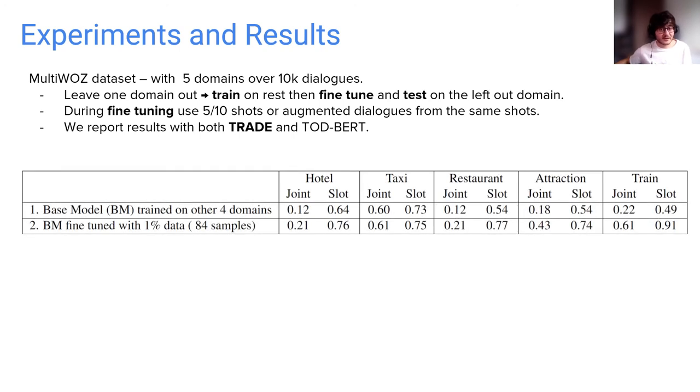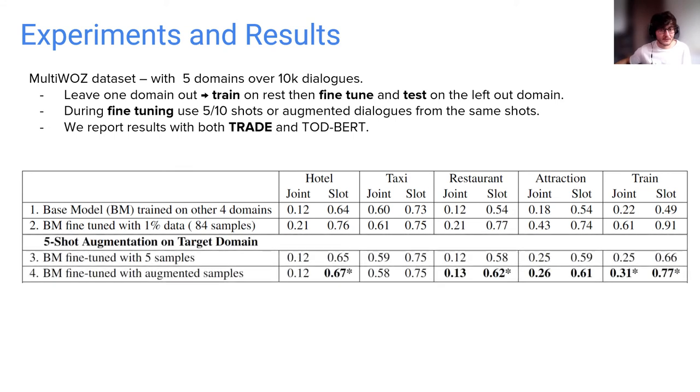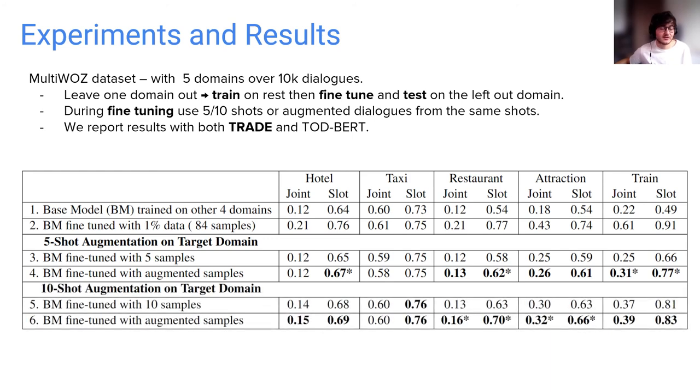Top row here on the table is base model without any fine-tuning, thus it is a lower bound and second row is base model fine-tuned with 84 shots, so it is an upper bound. So here we have the five-shot fine-tuning results. The first row is base model fine-tuned with original five shots, whereas the second one is base model fine-tuned with our augmented samples. We can see that augmentation brings in a significant improvement in almost all domains, and the results are also consistent for a 10-shot scenario as well.